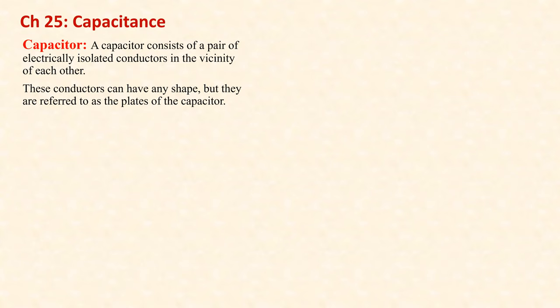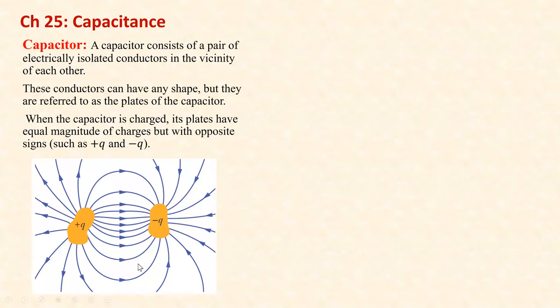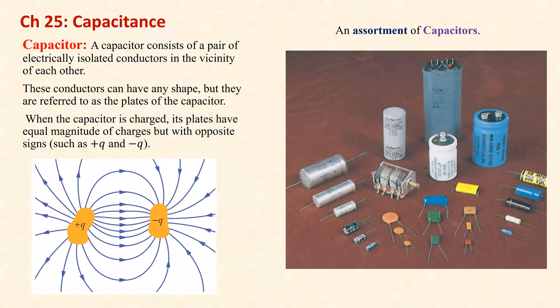When the capacitor is charged, its plates have equal magnitude of charges but with opposite signs, such as positive Q and negative Q. One conductor has positive charge Q, the other has negative charge Q. This is a charged capacitor. Capacitors in electronics come in many shapes — small ones and large ones. In modern electronic devices like cell phones, they are very small.